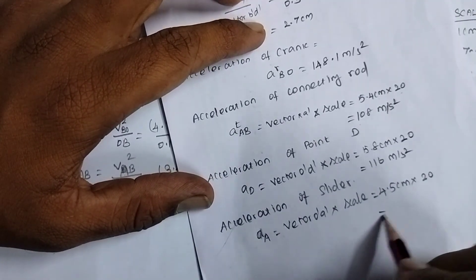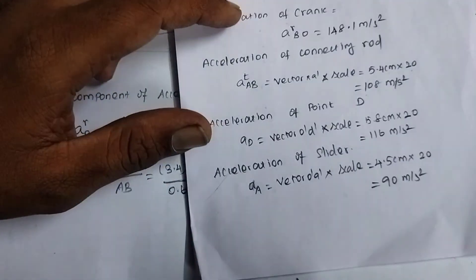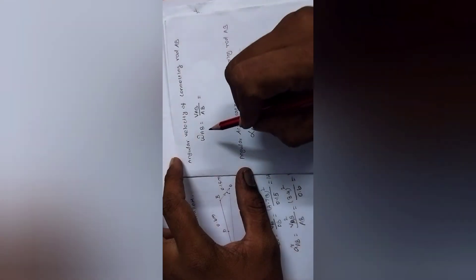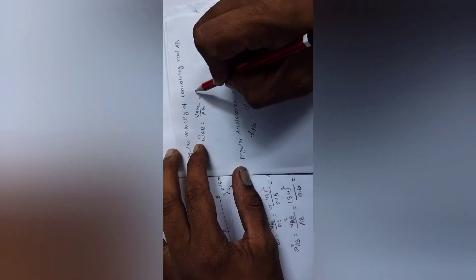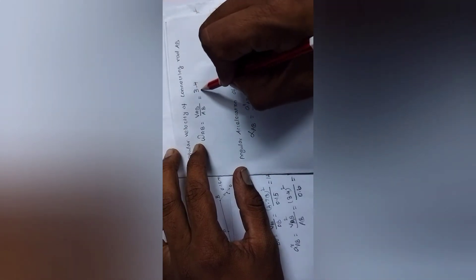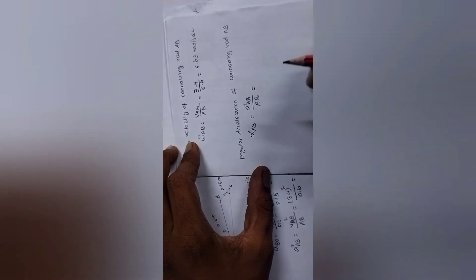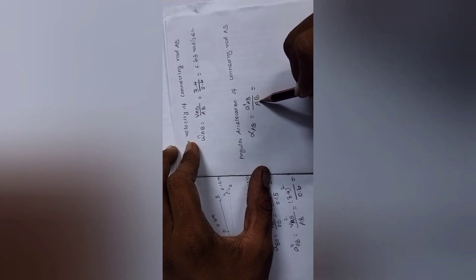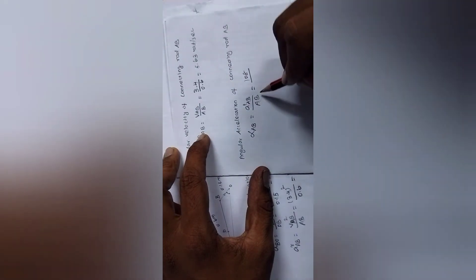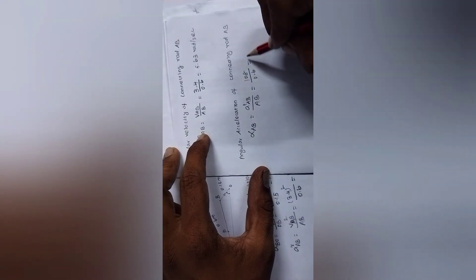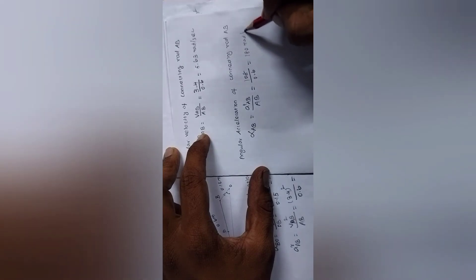The angular velocity of connecting rod AB: omega_AB = velocity of link AB / length of link AB = 3.4 / 0.6 = 5.63 rad/s.